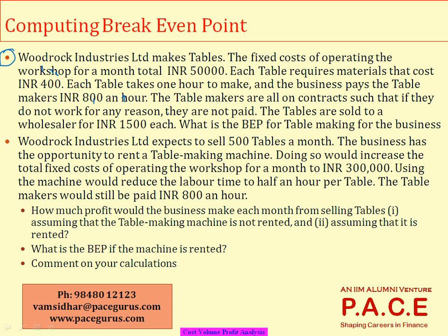Woodrock Industries has a fixed operating cost of 50,000 per month. Each table requires material that costs 400, and it takes one hour to make. The business pays table makers 800 an hour. So the fixed cost is 50,000, and there are two variable costs: 400 per table for material and 800 per table for labor, giving a total variable cost of 1,200 per table.